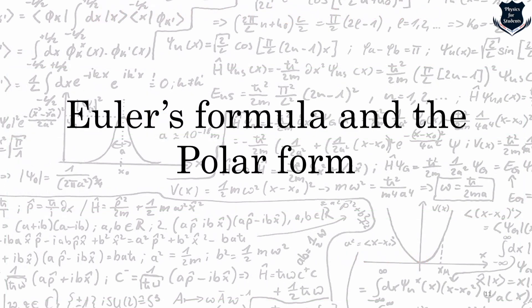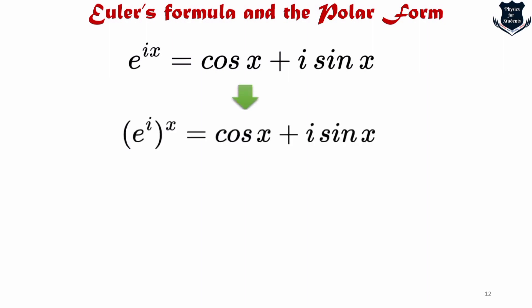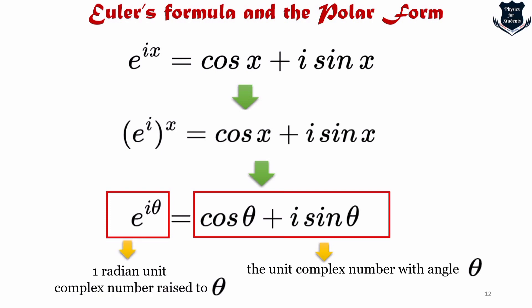We now come to Euler's formula and the polar form. Any complex number z = a + bi can be rewritten using trigonometric components. We rewrite it so that the right-hand side uses cos(θ) and sin(θ), since when we are working with angles theta is more accessible than x. You need a complex number with an angle theta, and the left-hand side shows the unit complex number raised to the theta value, which is why it appears as e^(iθ).